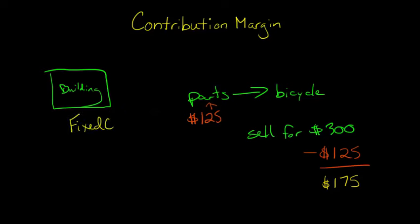And it's fixed because no matter how many bicycles you choose to make, you still have that fixed cost here, that building. So what is this $175, then? Because it seems like it's a pretty useful number, even though it's not our profit because we haven't figured in fixed costs yet.